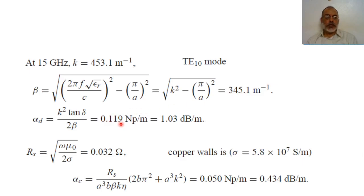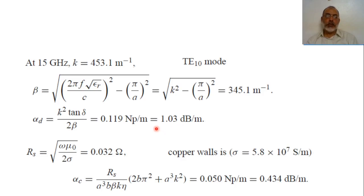This is the value of the attenuation coefficient due to the dielectric material in Nepers per meter. Multiplying it by 8.6 converts it to dB per meter.